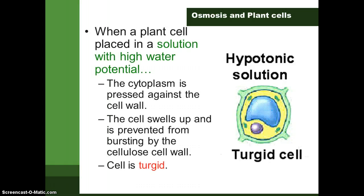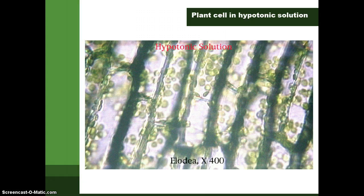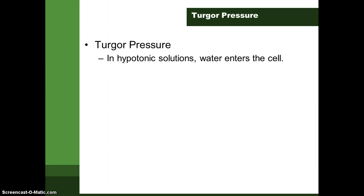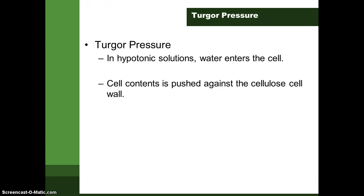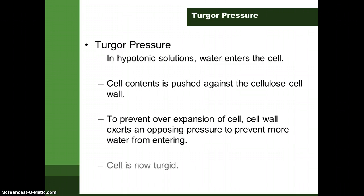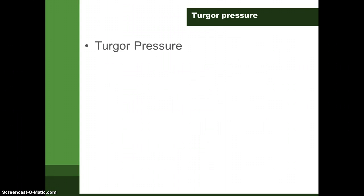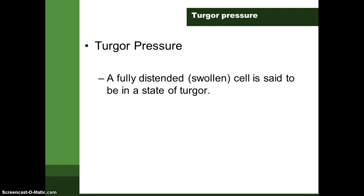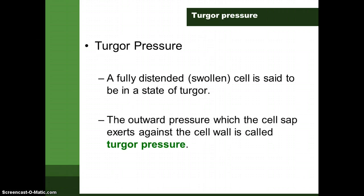A hypotonic solution is the opposite — it has a higher water potential than the cell. Water molecules will diffuse into the cell, causing it to become turgid. In a hypotonic solution, water enters the cell and the cell contents are pushed against the cell wall. To prevent over-expansion, the cell wall exerts an opposing pressure to prevent water from entering. The cell becomes turgid, and this outward pressure the cell exerts against the cell wall is called turgor pressure.